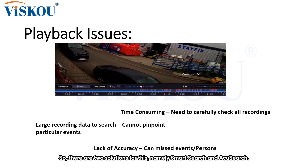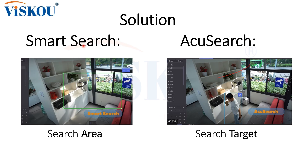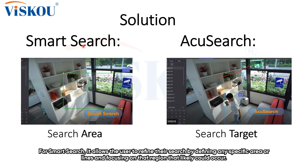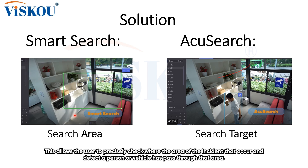There are two solutions for this, namely Smart Search and AccuSearch. For Smart Search, it allows users to refine their searches by defining specific areas or lines and only focusing on that region where an incident is likely to have occurred. This allows the user to precisely check where an incident may occur and detect whether a person or vehicle has passed through that area.